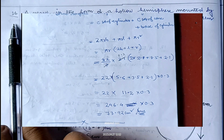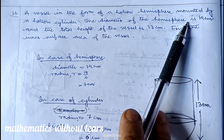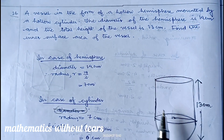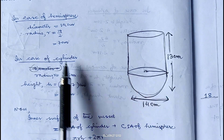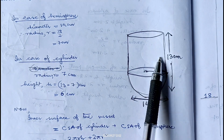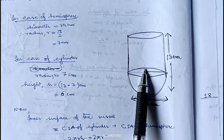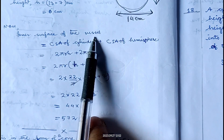Question number 16: a vessel is in the form of a hollow hemisphere mounted by a hollow cylinder. The diameter of the hemisphere is 14 centimeter and the total height of the vessel is 13 centimeter. Find the inner surface area of the vessel. Radius is 7 centimeter. Cylindrical part also has radius 7 and height equals 13 minus 7 equals 6 centimeter. Inner surface area equals curved surface of cylinder plus curved surface of hemisphere.